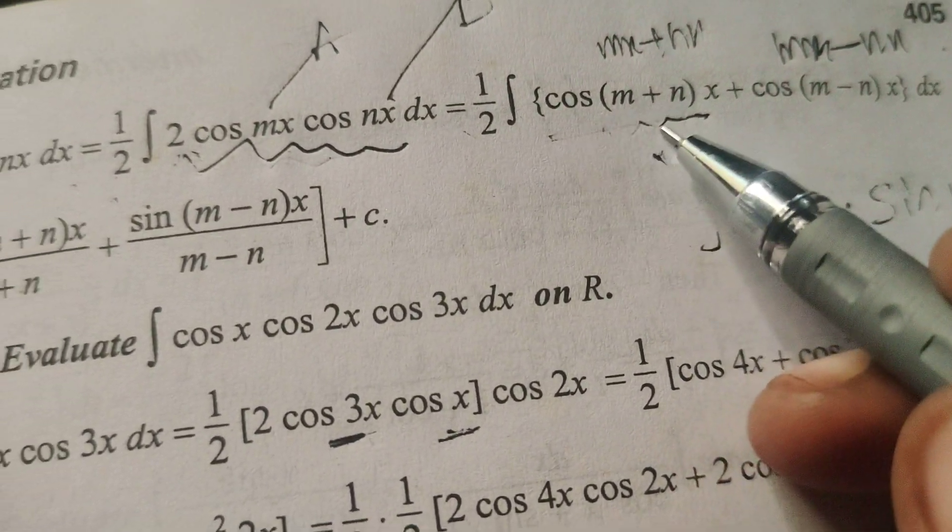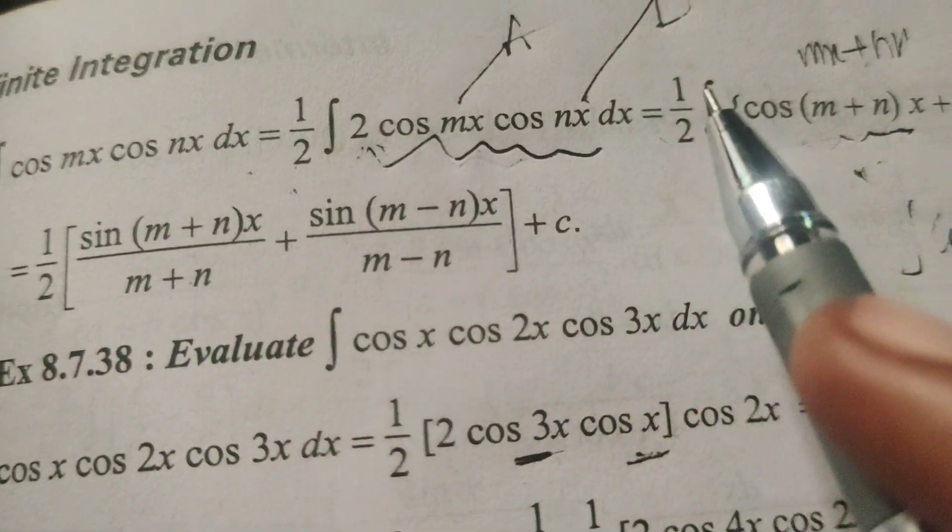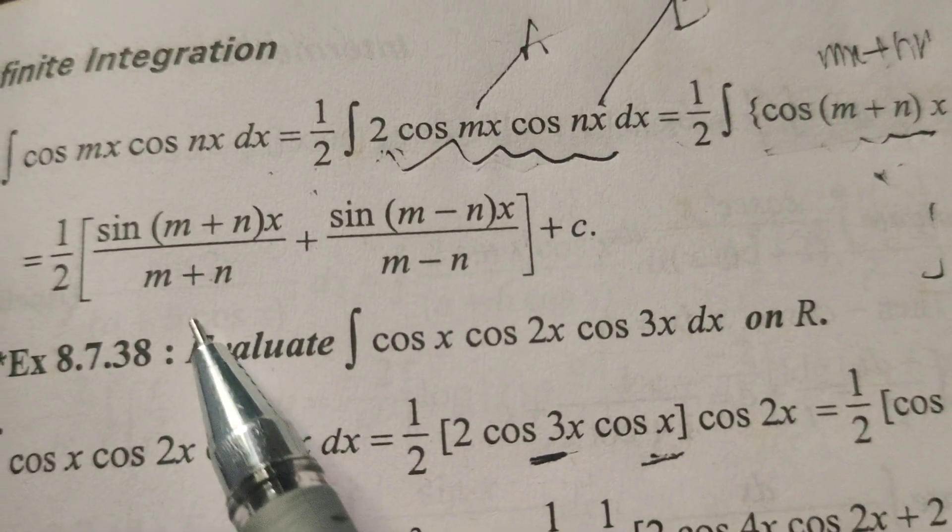So in place of x here m plus n, sine of m plus n into x divided by again m plus n into x, x means 1, so m plus n.